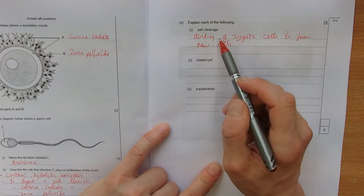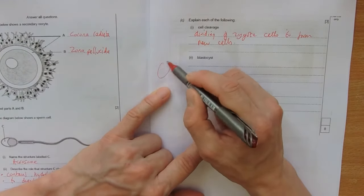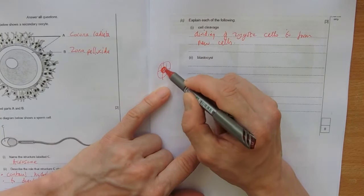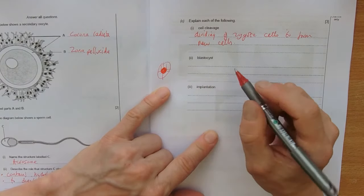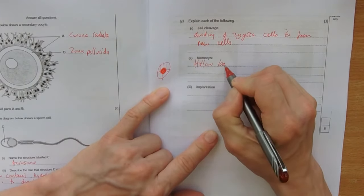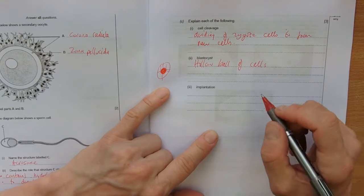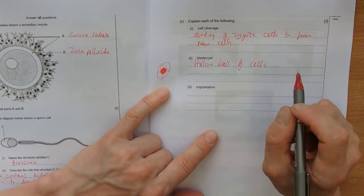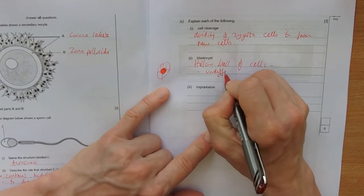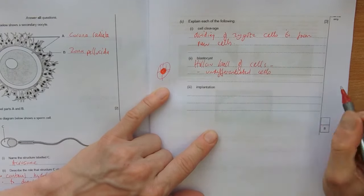So we get the zygote and then we get the next stage on is called the blastocyst. And that's where we're not just getting cells there. We're actually getting a hollow ball. So it's hollow on the inside. And that's when we can call it a blastocyst. So hollow ball of cells. And these are largely undifferentiated or slightly differentiated, but we can say undifferentiated cells. So they're not specialized yet.